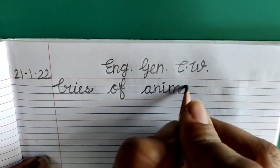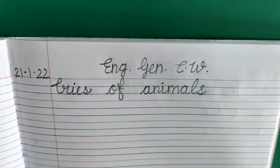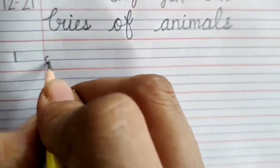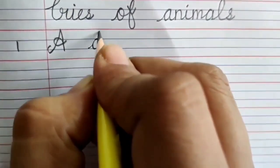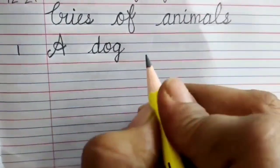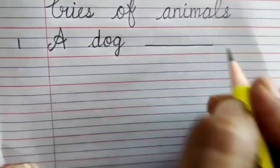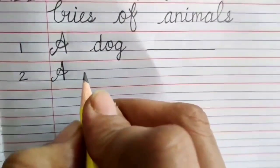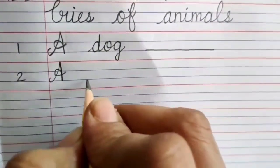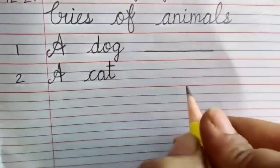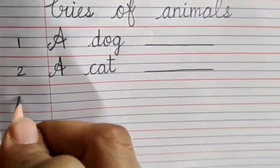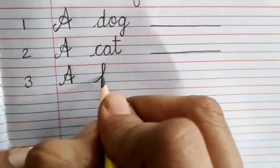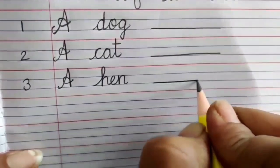In margin write number 1. Near the margin write down capital A space D O G dog one finger space dash. Number 2 capital A one finger space C A T cat space dash. Number 3 capital A one finger space H E N hen dash.